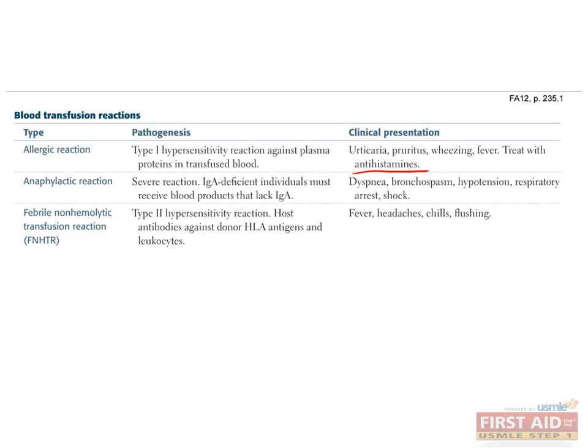One type of type 2 reaction you might see is febrile non-hemolytic transfusion reaction. This involves attack by host antibodies of donor HLA antigens, resulting in nonspecific symptoms like fever, headache, chills, and flushing.